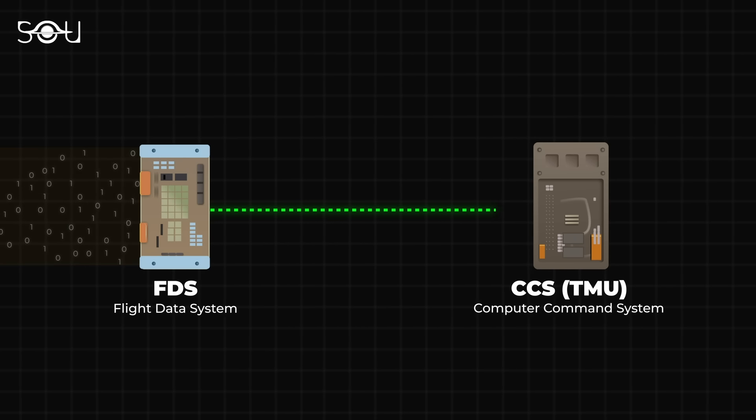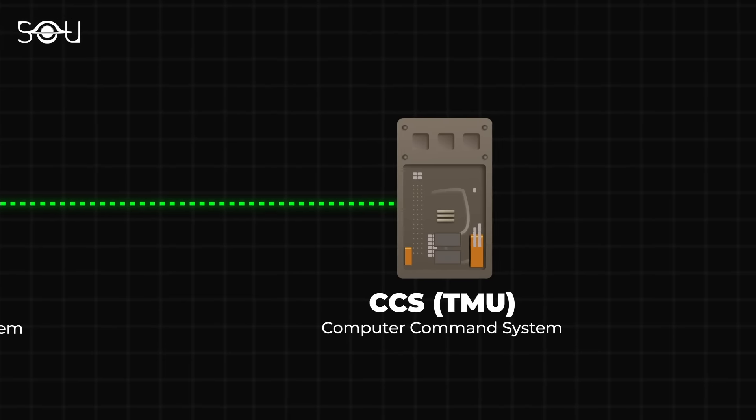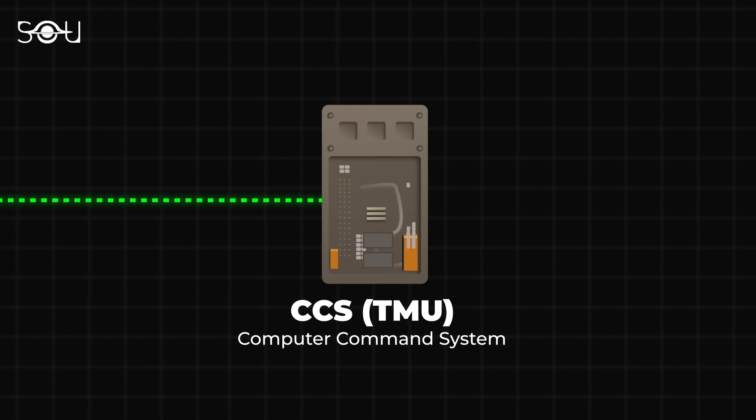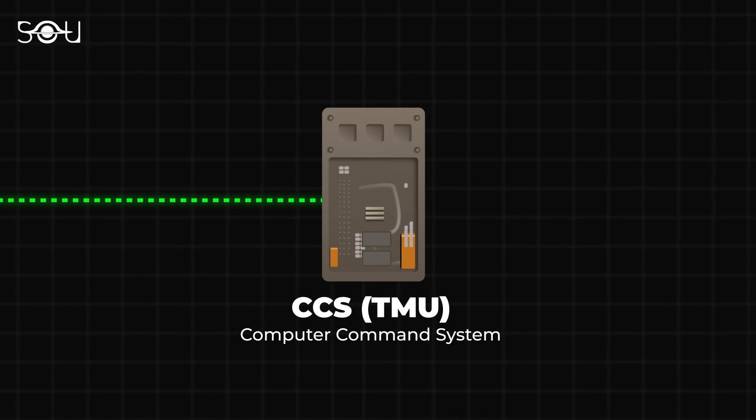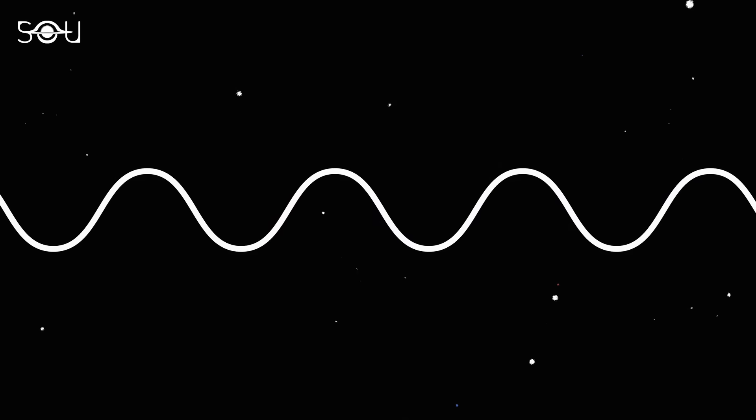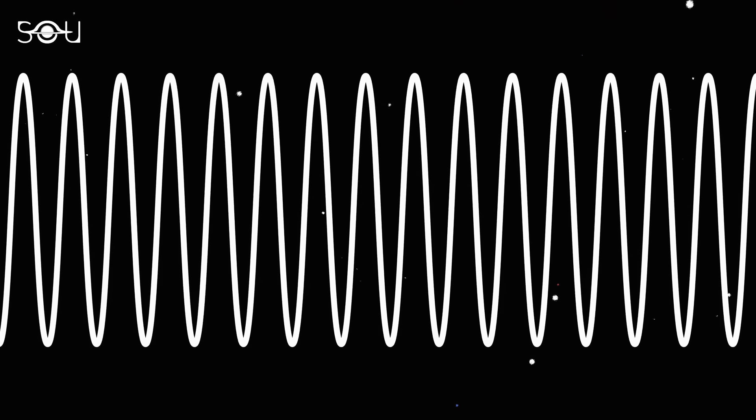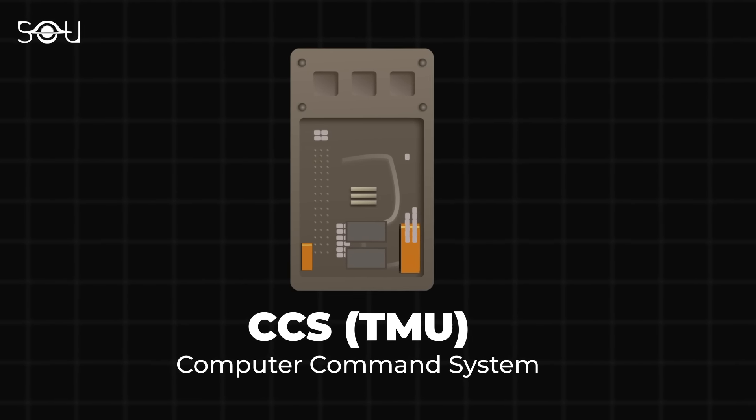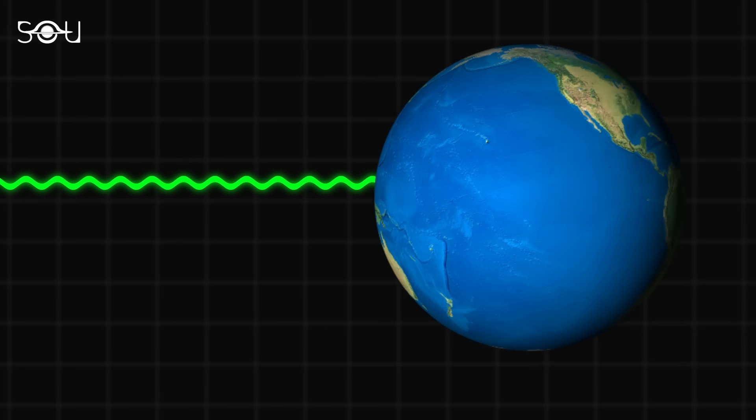This package is then sent to the second computer, the Computer Command System, containing the Telemetry Modulation Unit, or the TMU. The TMU's job is to transmit this package back to Earth. To do so, the binary data is first modulated onto a carrier signal for transmission to Earth. Once this is done, the TMU transmits the waves carrying the data received on Earth via the Deep Space Network.